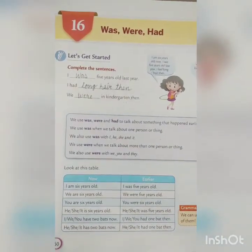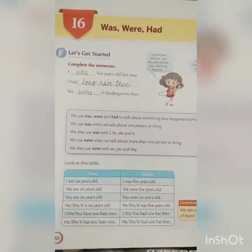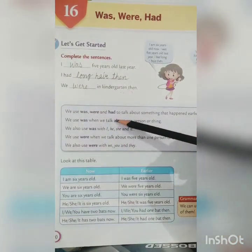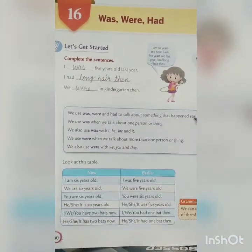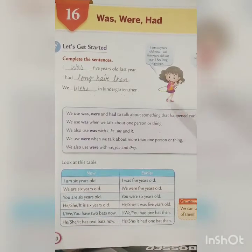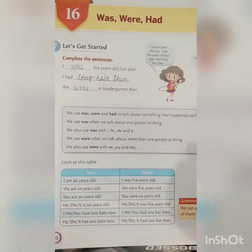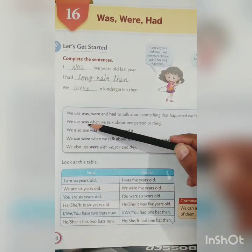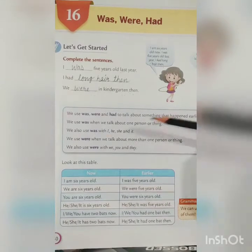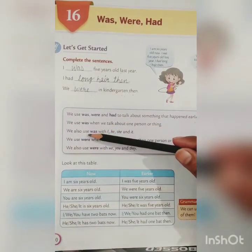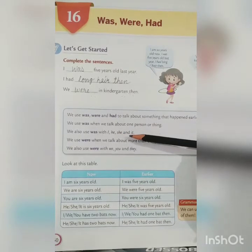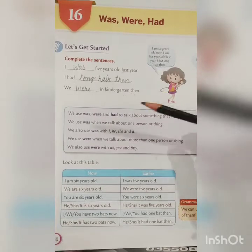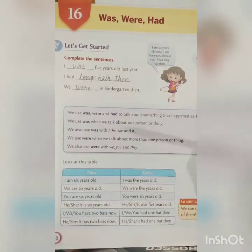Now let's understand by some rules. We use 'was' or 'had' to talk about something that happened earlier — it means the thing has already happened. We always use 'was' when we talk about one person or one thing. We always use 'was' with I, he, she, or it — that means with a singular noun or pronoun.